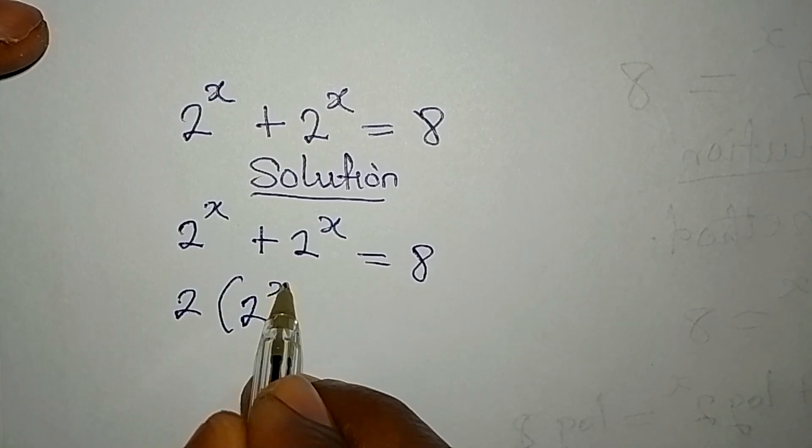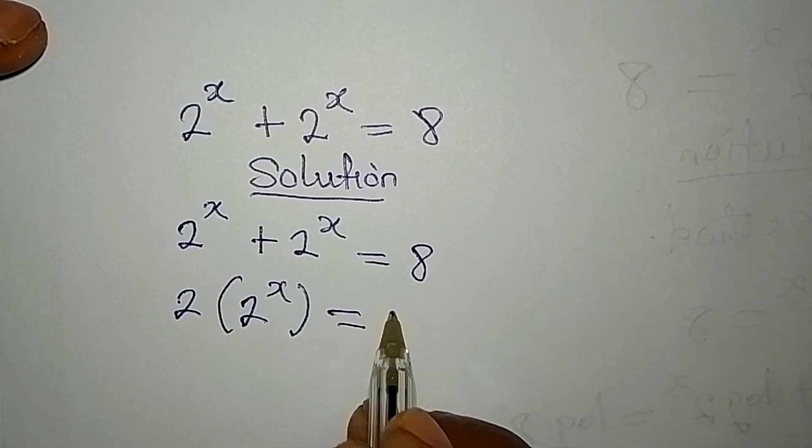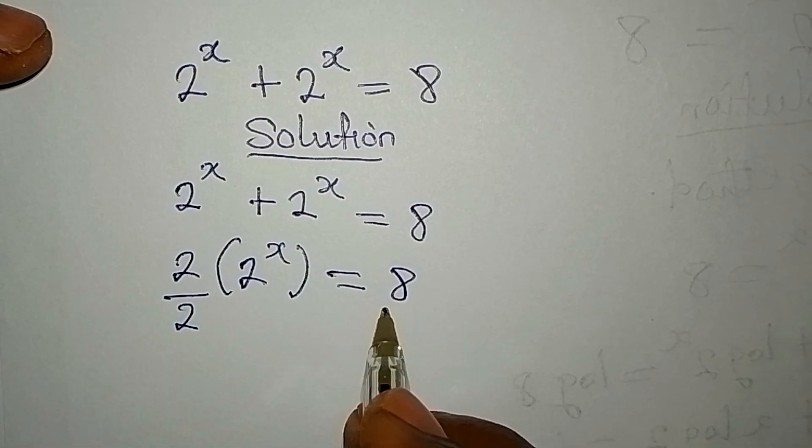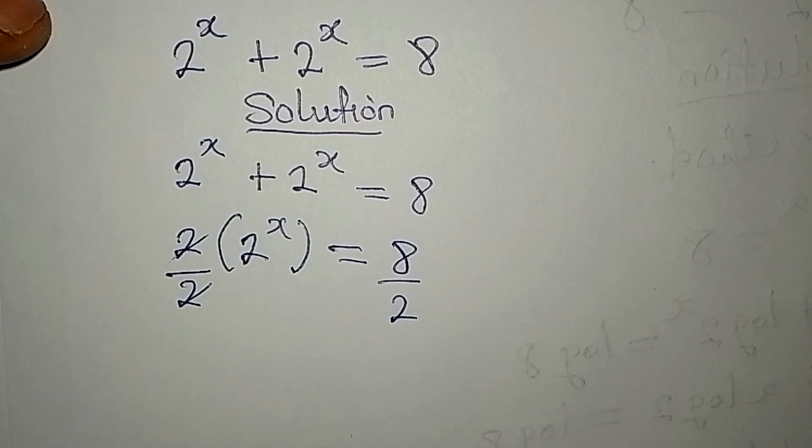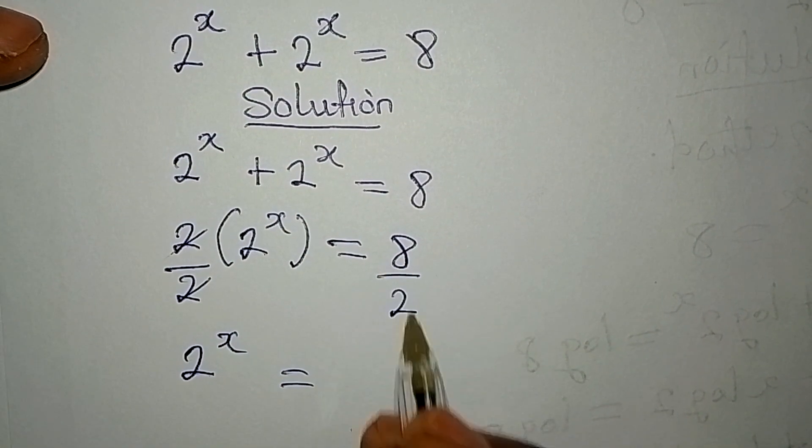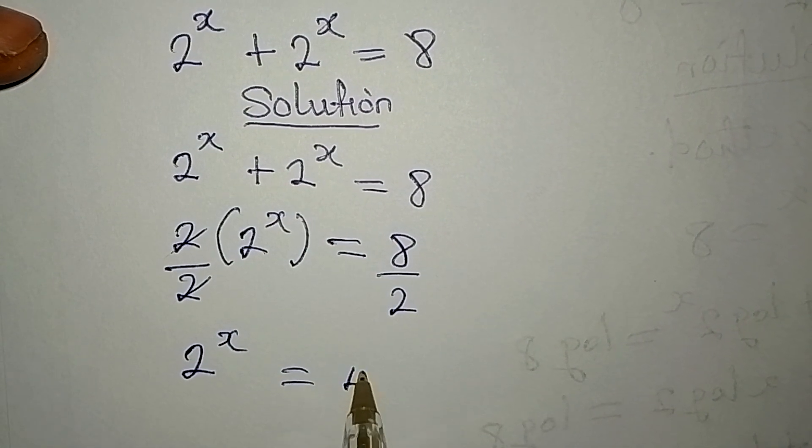We can divide this by 2 and divide this by 2. This will cancel, so 2 to the power of x is equal to 8 divided by 2, and that is 4.